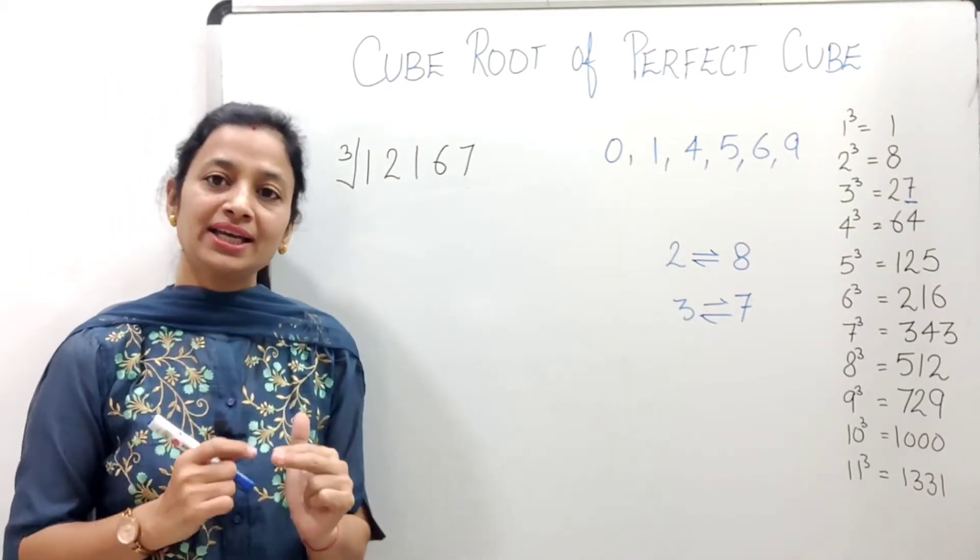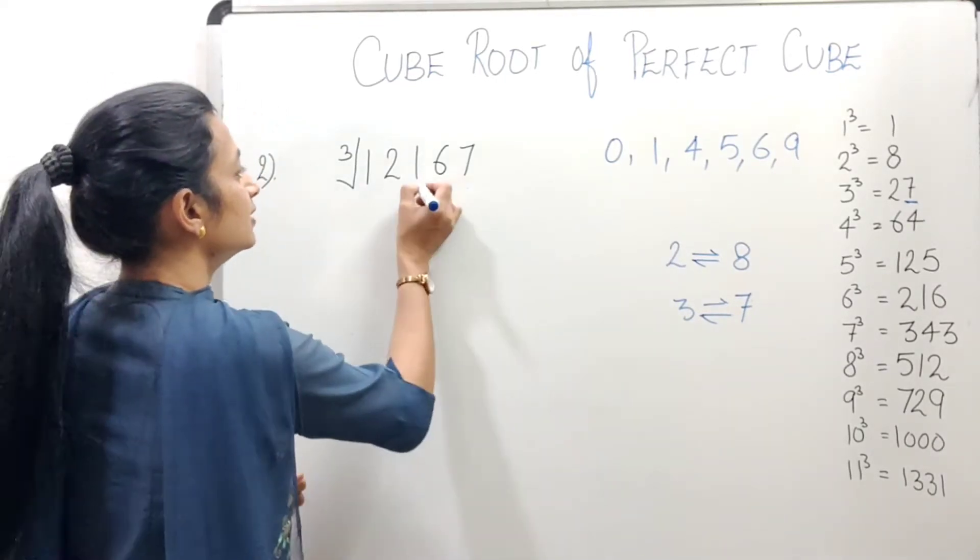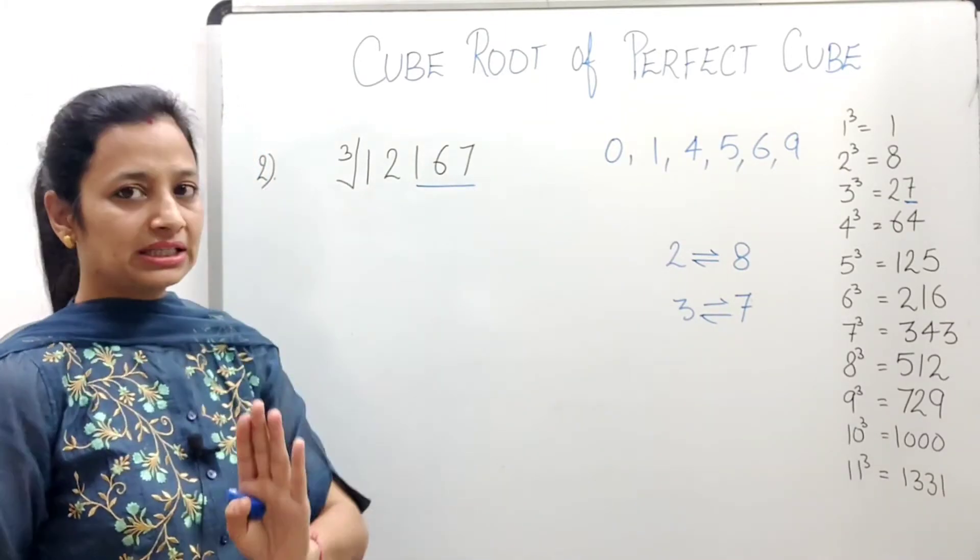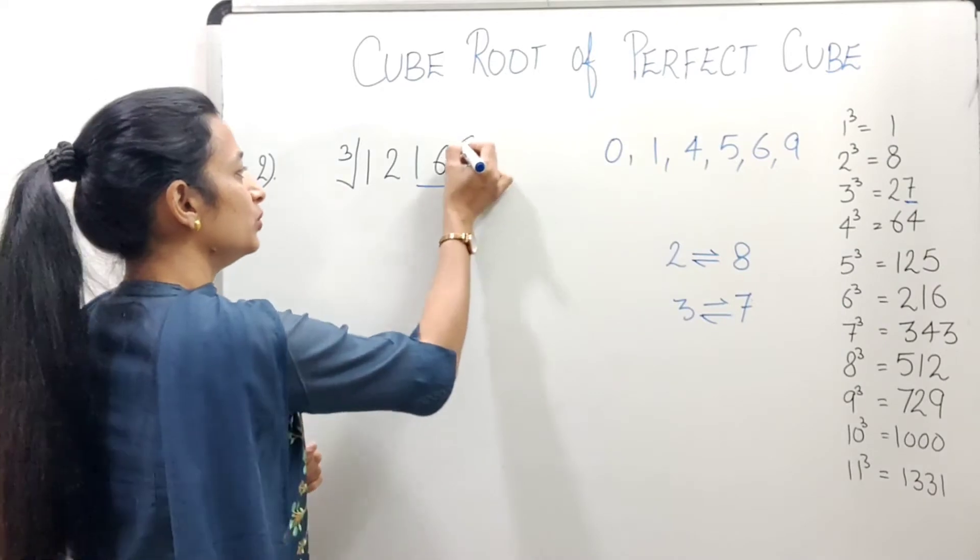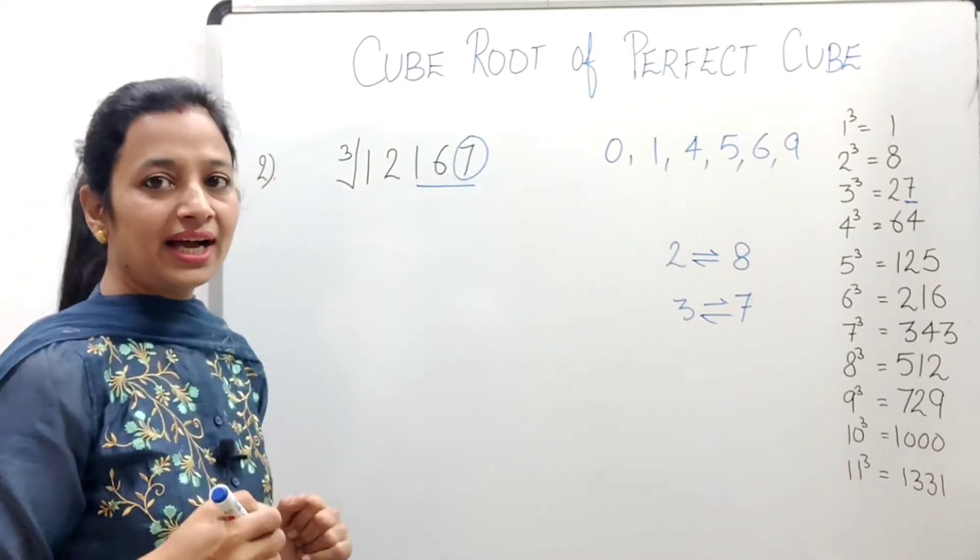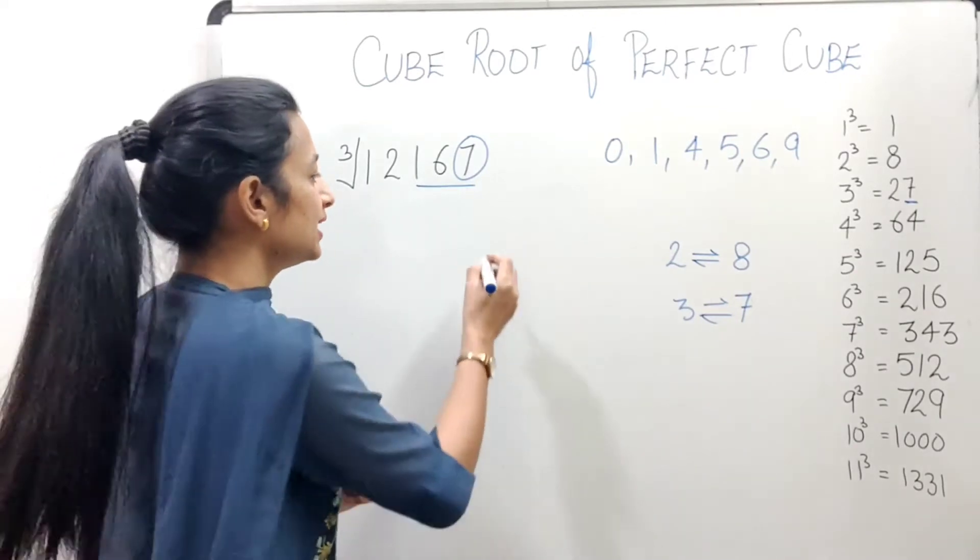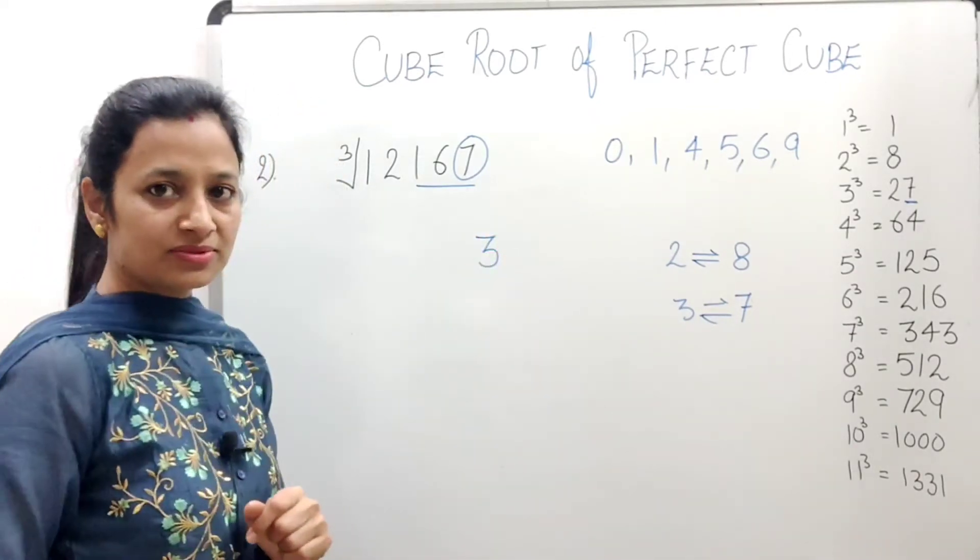Now, the next example is: find cube root of 12167. Again, we will do grouping. These three numbers will be in one group, and the remaining in the other. Now here, at the unit place, what is there? 7. And as we know, if 7 is at the unit place, then its cube's unit place will be 3.